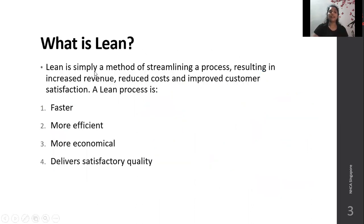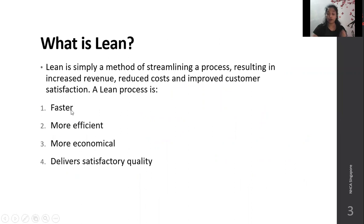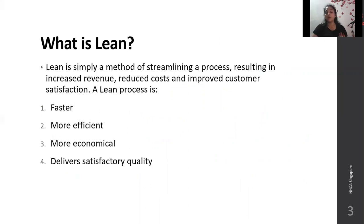What is Lean? Lean is simply a method of streamlining the process, resulting in increased revenue, reduced cost, and improved customer satisfaction. A Lean process is much faster than a normal process. It is more efficient than a previous non-Lean process. It is more economical as it saves more time, cost, resources, and it delivers satisfactory quality of services and products.